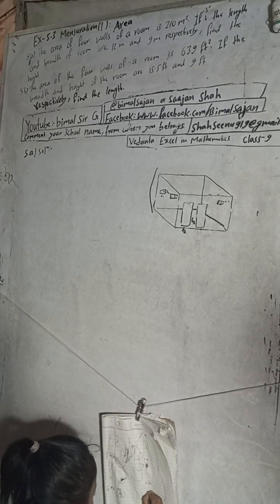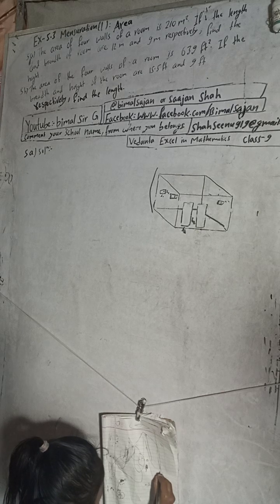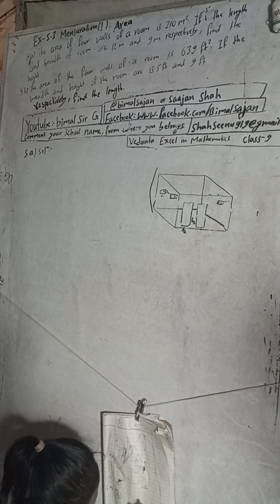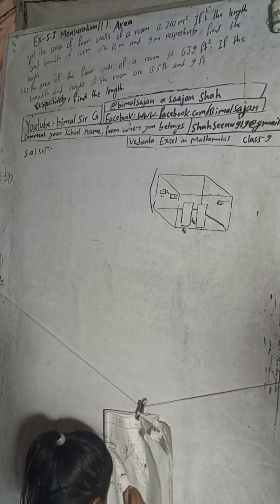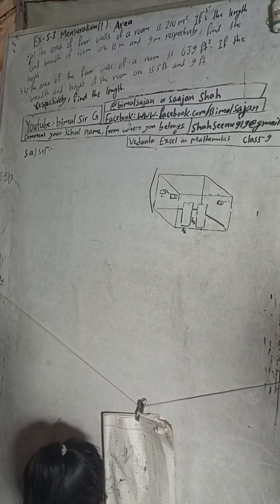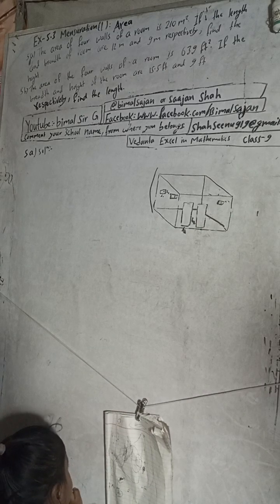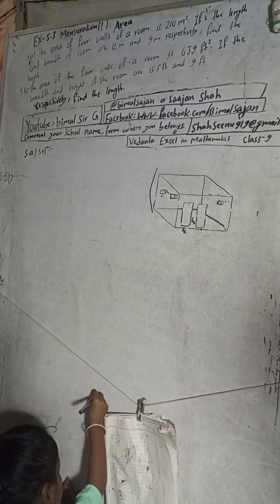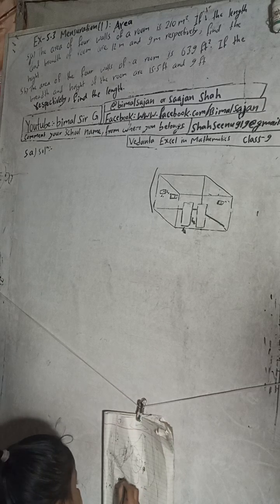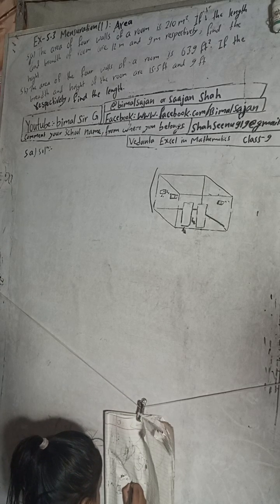Hi class 9 and 10 students, welcome back to Bimalswarji YouTube channel. This is question number 5a, exercise 5.3 mensuration, first part area, Vedanth Excellent Mathematics class 9. The question is: the area of four walls of a room is 210 meter square. If the length and breadth of room are 12 meter and 9 meter respectively, find the height.